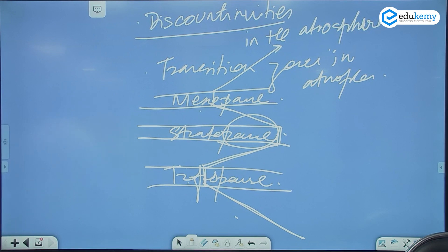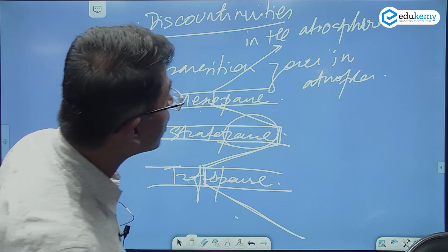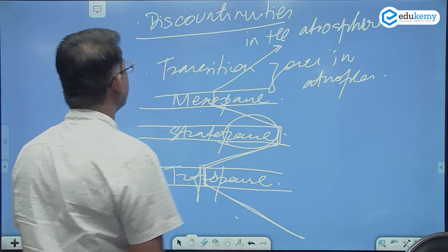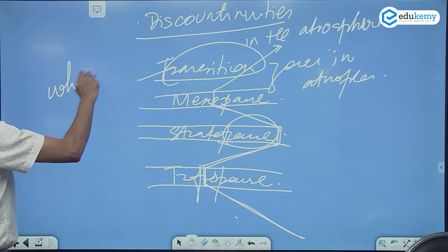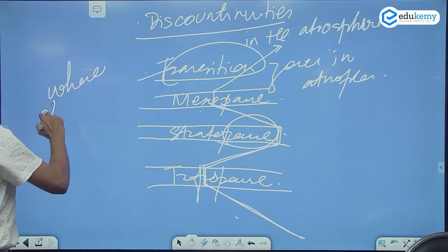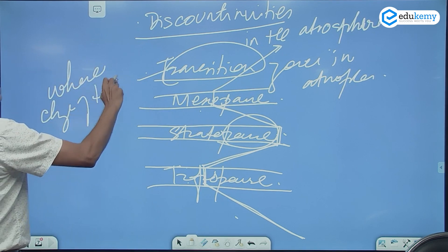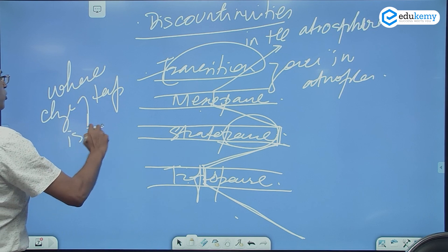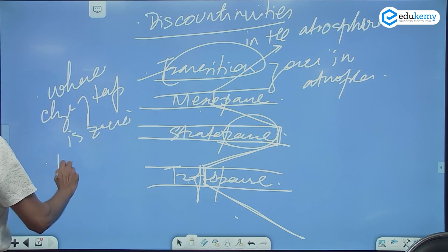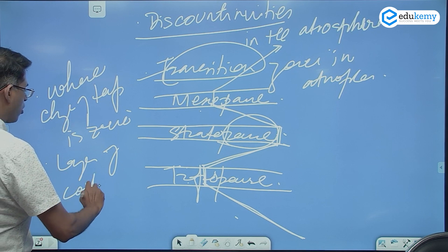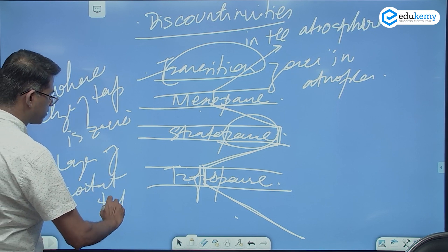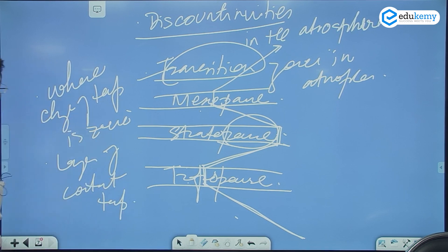So tropopause, stratopause, mesopause — all of these are transition zones where the change of temperature is zero. It is a layer of constant temperature.